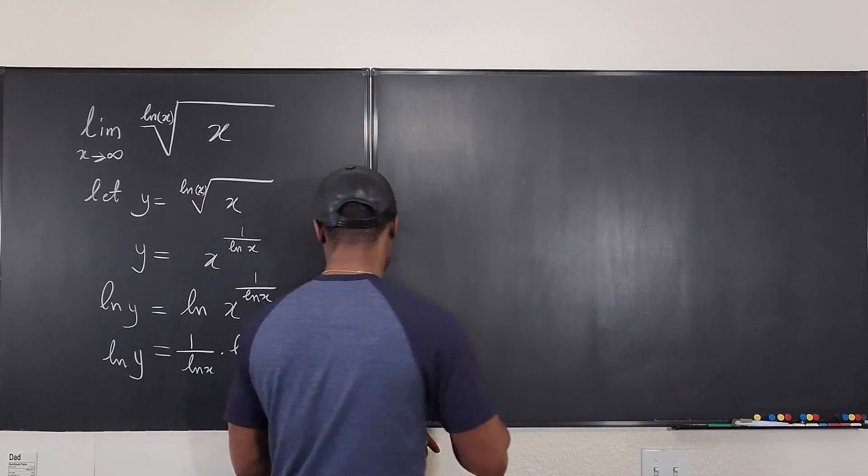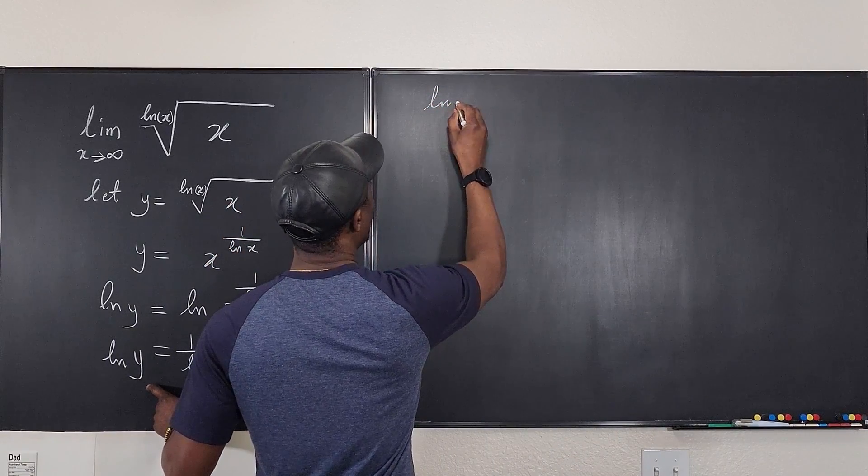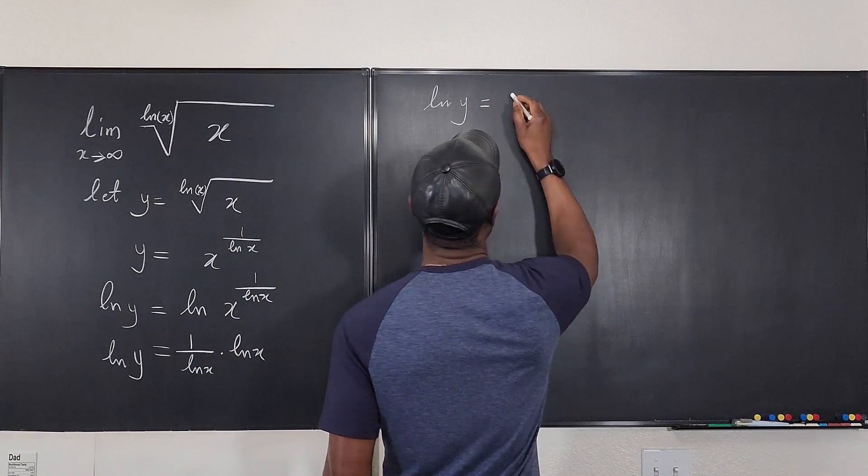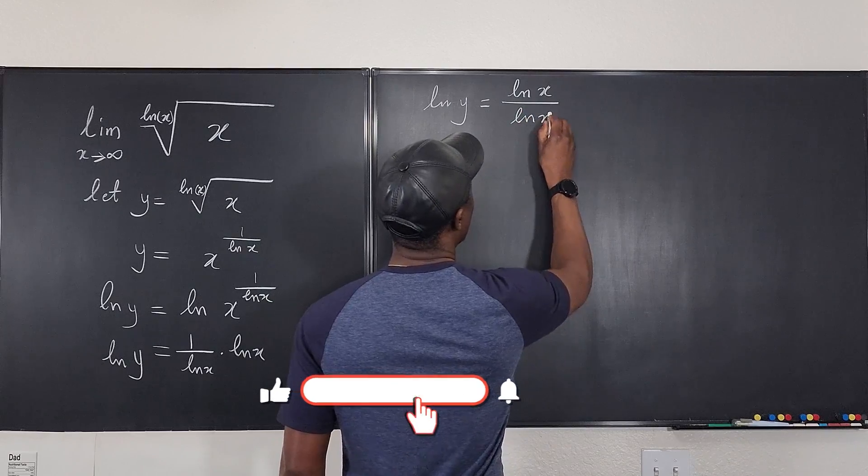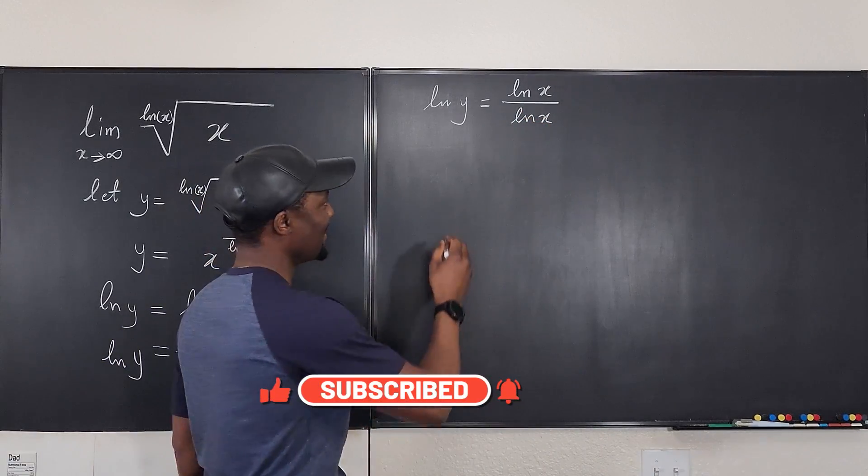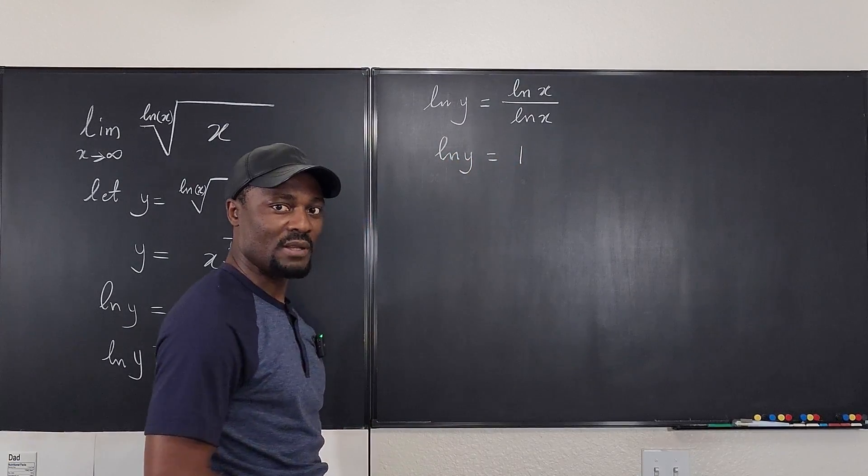Now we're gonna clean this up, and what does this look like? It looks like natural log of y is equal to ln(x) divided by ln(x). ln(x) over ln(x). ln(y) is equal to 1.